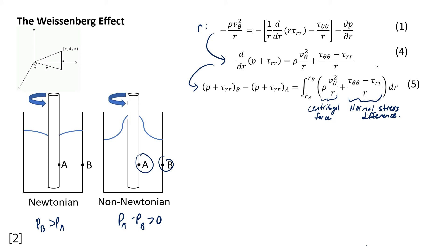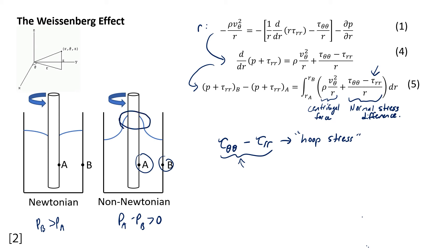We actually know what this normal stress difference — tau_theta_theta minus tau_rr — contributes to. It contributes to something called the hoop stress. Essentially, this difference causes tension along the streamline. Since we're working in cylindrical coordinates, the streamline circles all the way around, essentially making a hoop. That's where we get the term hoop stress. We essentially have this stress that's pulling the fluid up along the rod, which is not seen for Newtonian fluids.